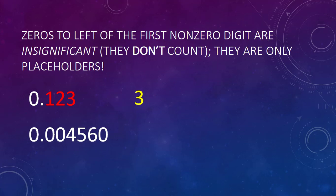Now look at this one. We have two zeros to the left of the four right after the decimal, but those are only holding the place. The only zero that is significant in this number is the one at the end, because it's a trailing zero in a number that has a decimal. So the first three zeros are not significant because they are to the left of the first non-zero digit. The four, five, and six are obviously significant, and we have four significant figures.